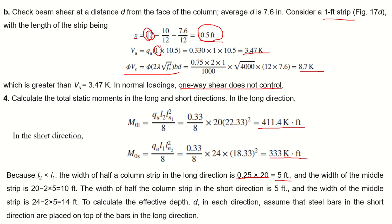The width of half the column strip in the long direction is 0.25 × 20 = 5 feet; the middle strip width is 20 − 2×5 = 10 feet. In the short direction, the half column strip is 5 feet and the middle strip is 14 feet. Steel bars in the short direction are placed on top of those in the long direction so the long-direction bars get greater effective depth to carry the larger bending moment.